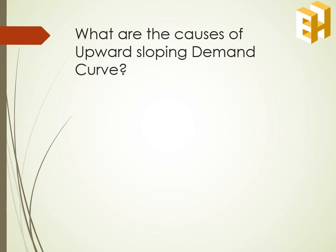The causes of an upward sloping demand curve are: first, articles of distinction, also known as the Veblen effect — the more capability a commodity would have to enhance the status, more of it will be demanded at higher price. Second is ignorance — if a consumer is ignorant in the purchase of a commodity, he may buy it at a higher price. Lastly, we have Giffen goods, which are a part of inferior goods whose quantity demanded falls with a fall in price.